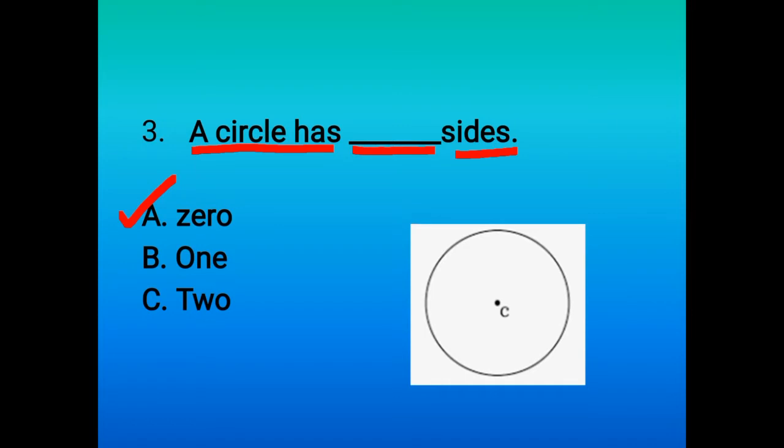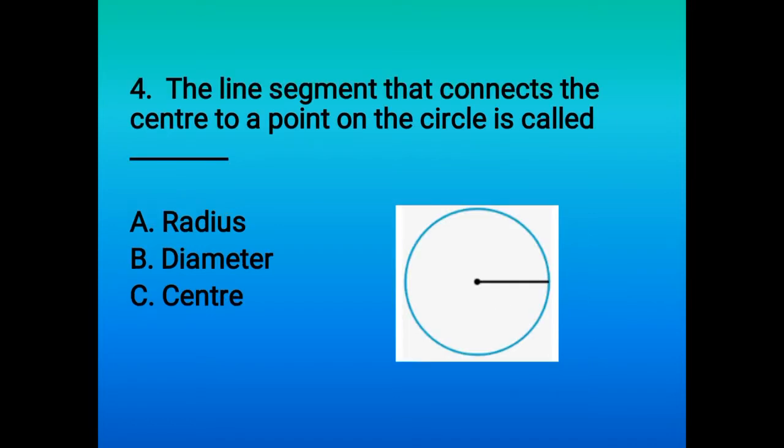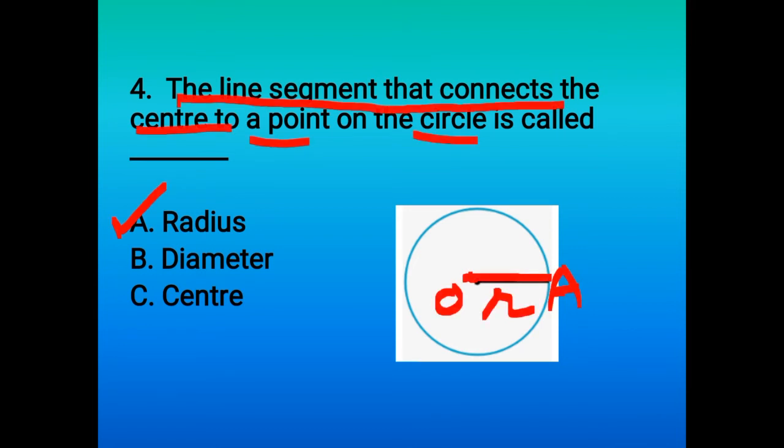Question 4: the line segment that connects center to any point on the circle is called dash. We know that this point O is called the center of the circle, and here A is any point on the boundary of a circle. When we join O to A, we get radius. So option A is the correct option here.